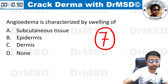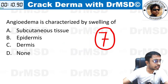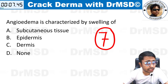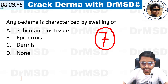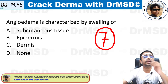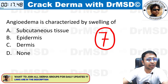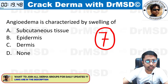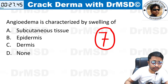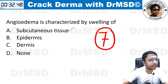Question number seven — for this question we have 20 seconds. Angioedema is characterized by swelling of — these are memory-based questions; there is no rocket science. All you need to do is just remember the concept and try to answer based upon memory. The answer for question number seven is subcutaneous tissues — subcutaneous tissues. Very, very important.